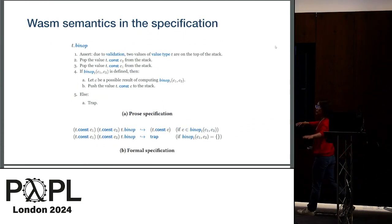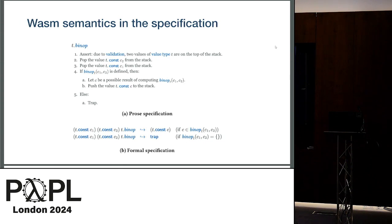Wasm semantics in the specification has formal semantics and prose specification. This is a binary operator. Number one: assertion — Wasm has validation, static semantics, unlike JavaScript. Number two: pop the value from the stack. My students were like, what is a stack? Pop. Number three: pop the value from the stack and do this binary operation. If that's defined, then do this. Otherwise, trap. Wasm was really different from JavaScript. We had to understand this semantics, and the formal specification is the usual Greek letters.